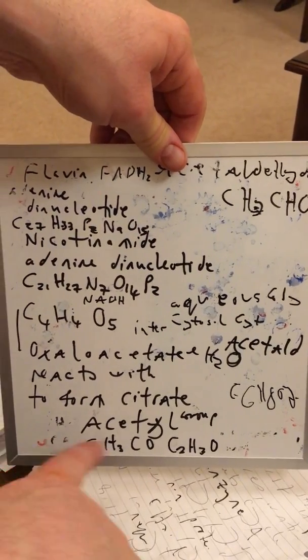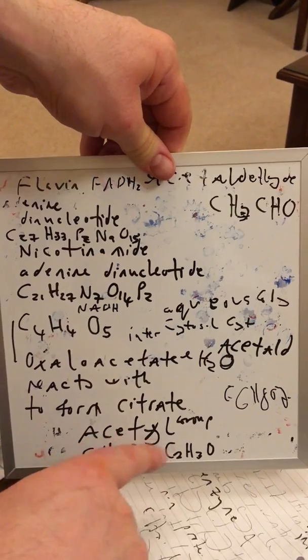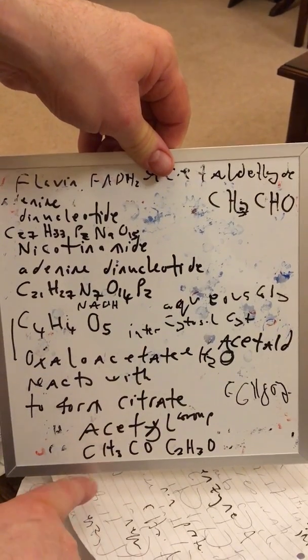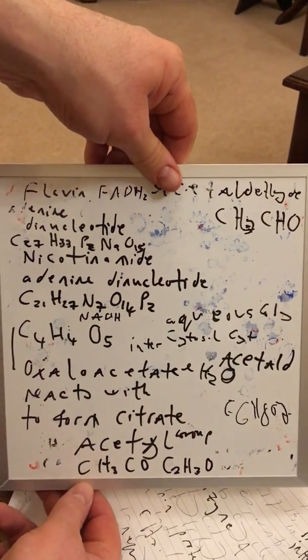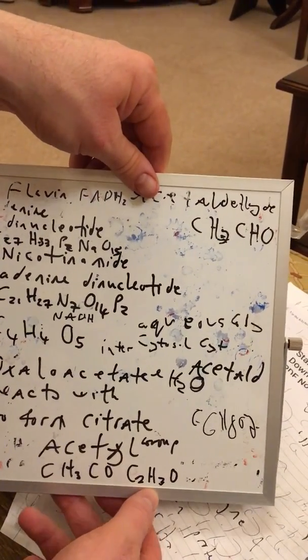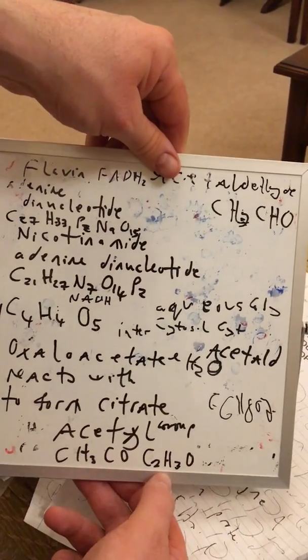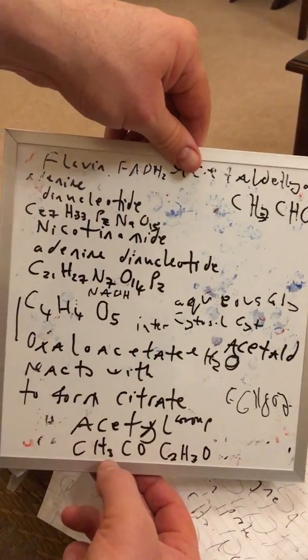And I've got another one here to show: acetyl group. And the chemical formula is C-H3-C-O. And if you do it, it's quite interesting, because if you do C2-H3-O, one atom of oxygen, it means the same thing. So you've got two atoms there, three atoms there, three there.